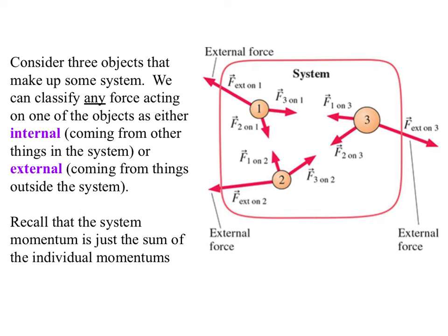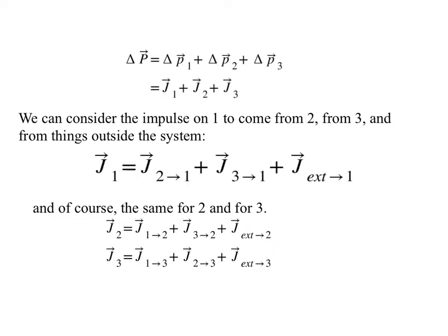And then recall the system momentum is just the sum of the individual momentum. So P system is P1 plus P2 plus P3. Since the system momentum is the sum of the individual momentum, then the change in the system momentum is the sum of the change in the individual momentum, which of course is just the same as saying each change is an impulse. So the change in the system momentum is just the sum of all the individual impulses that act.